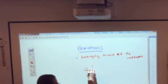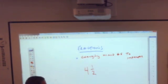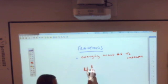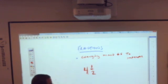For example, if you have 4 and 1 half, that is a mixed number. It's called mixed because it is a whole number and a fraction. We are going to change that. We need to make that improper.